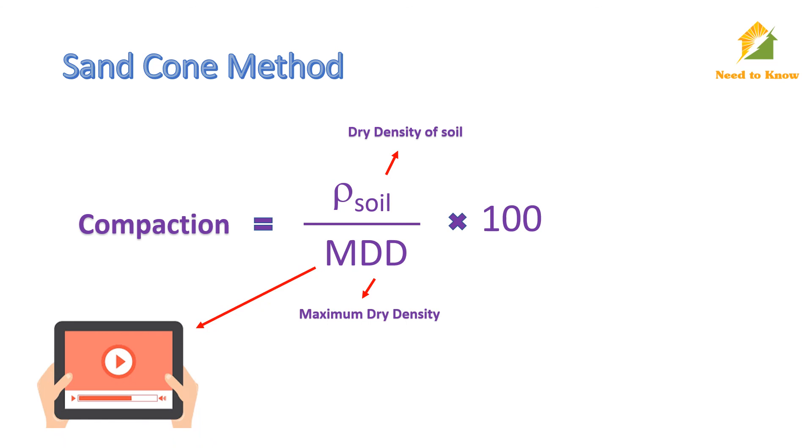Finally, we can calculate compaction by dividing field dry density of soil over maximum dry density. Compaction can be expressed in percentage. Maximum dry density calculation will be explained in the coming video.